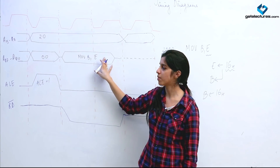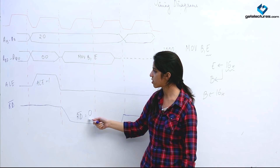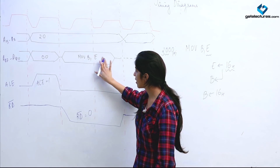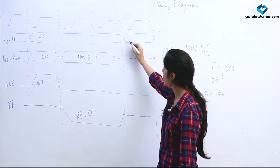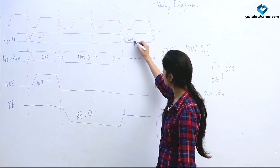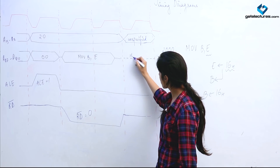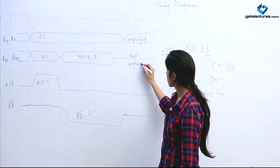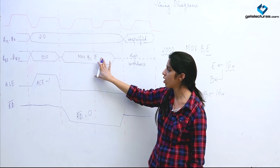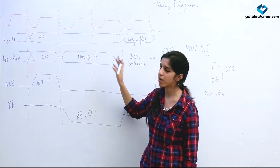Since ALE is now 0, the bus behaves as a data bus. Read bar is made 0 to read the instruction. The opcode MOV B, E is fetched from memory into the data bus. In the fourth T-state, the address bus contents are unspecified, and the multiplexed bus is made high impedance so the data on the data bus does not change — we want MOV B, E to remain available.